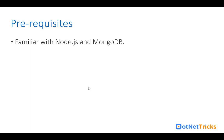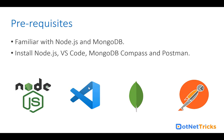To get started with this training program, make sure you are familiar with NodeJS and MongoDB, and have installed NodeJS, VS Code, MongoDB Compass, and Postman. These are the necessary tools — make sure you have them installed on your machine. I hope you will join me in this journey to learn how to build REST APIs using ExpressJS, MongoDB and design patterns. See you in the session.